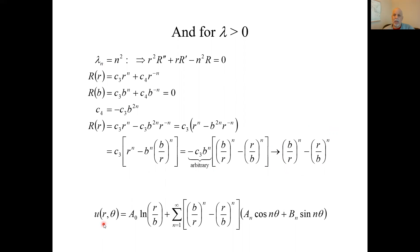So now I can put everything together. Here's for the lambda equals 0 case. The theta equation was just constant. And here's for the positive eigenvalues. Here were the theta eigenfunctions, and here's the corresponding R function. I summed them all up to give me my general solution.